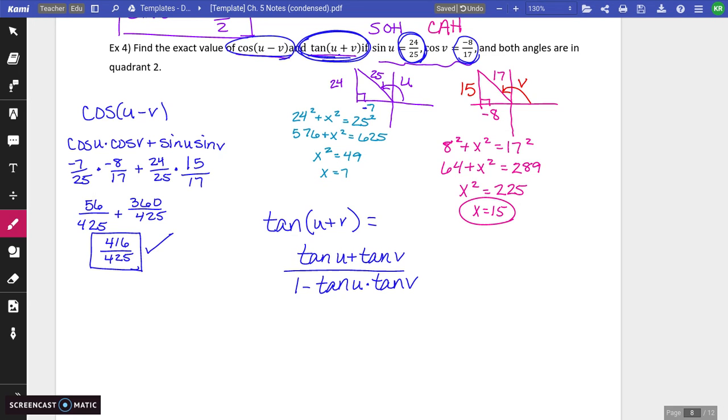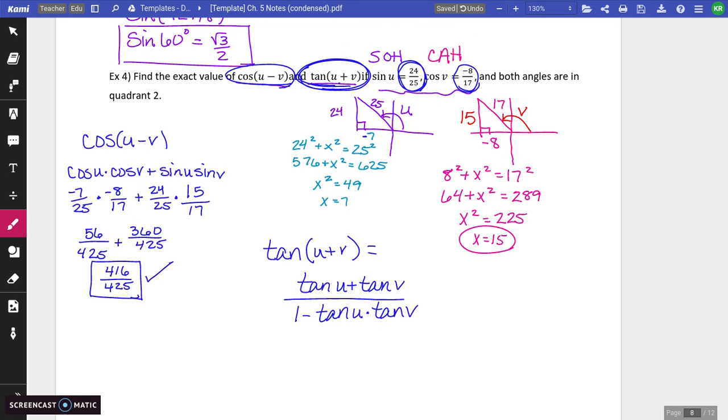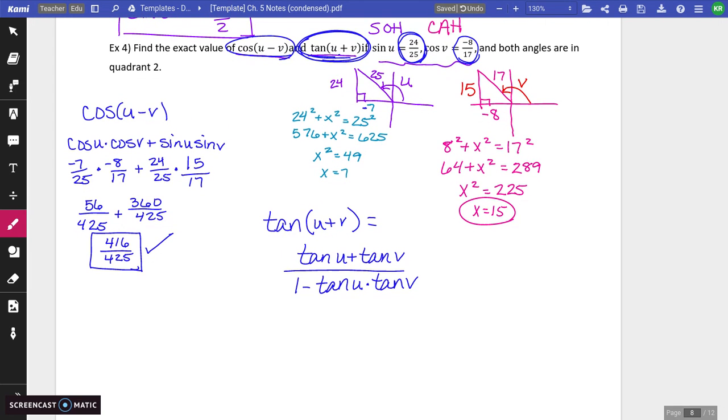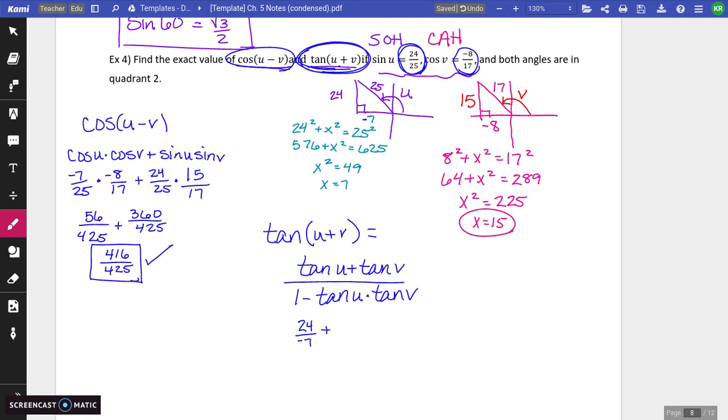tangent U plus tangent V over 1 minus tangent U times tangent V. Okay, so now we're going to just go through. So U. So U, same thing. So go back to angle U tangent opposite over adjacent. So that's going to be 24 over negative 7 plus tangent V. So go to angle V tangent opposite over adjacent. So that's going to be 15 over negative 8.